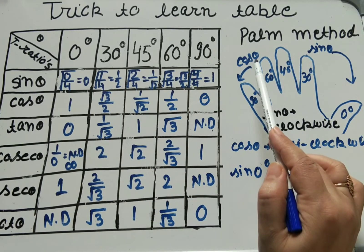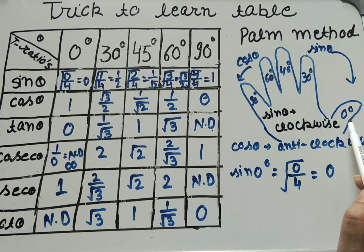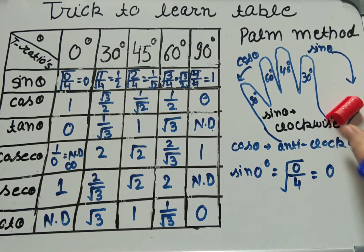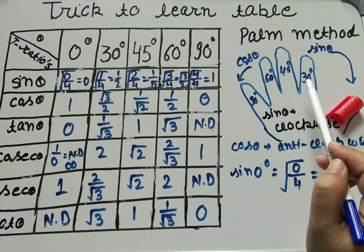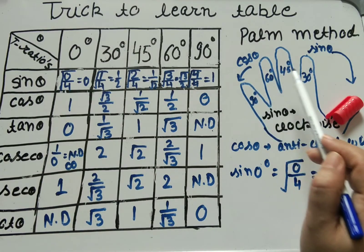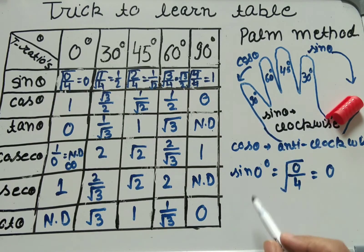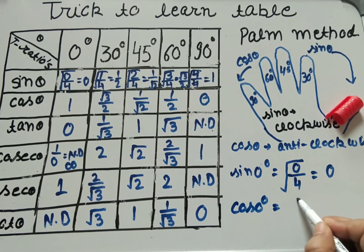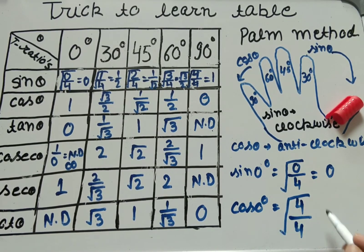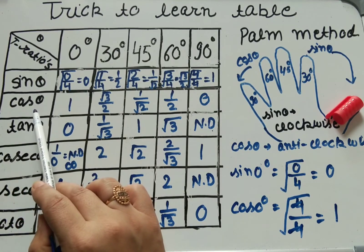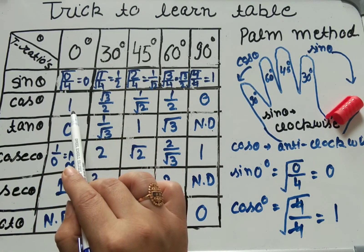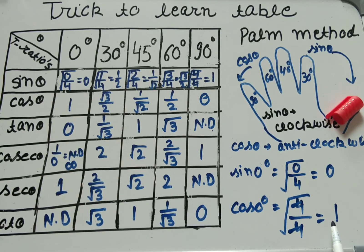For cos 0° using the palm method: we hide 0 degree (the thumb). Moving anticlockwise, count the remaining fingers: 1, 2, 3, 4 fingers. So numerator is 4, denominator is 4, apply square root — √(4/4) = 1. So cos 0° = 1, which matches the table.